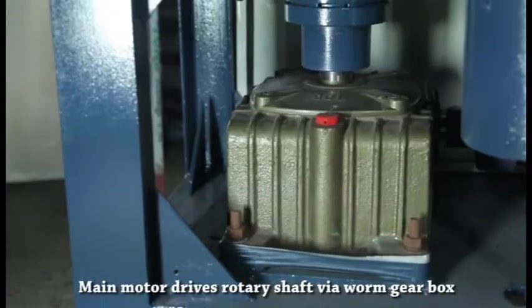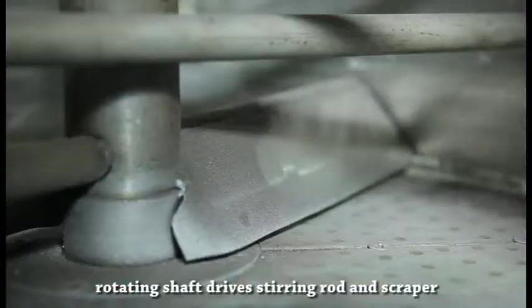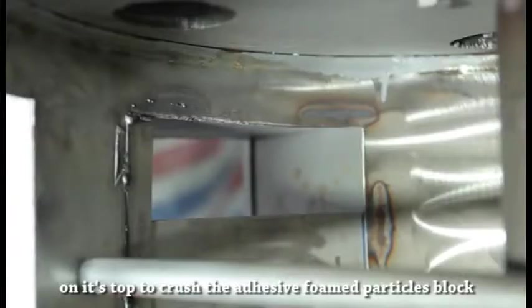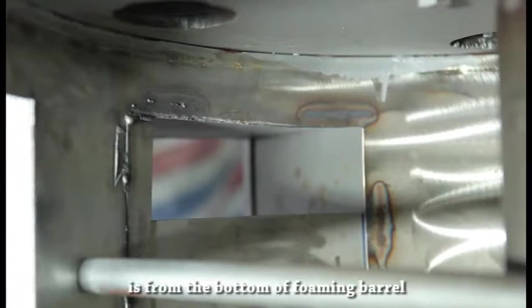The main motor drives the rotary shaft via worm gearbox. The rotating shaft drives stirring rod and scraper on its top to crush the adhesive foam particle blocks and blow them out of the foaming barrel by compressed air from the bottom.